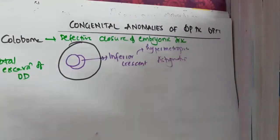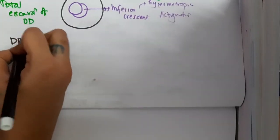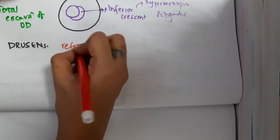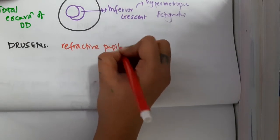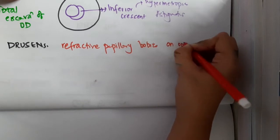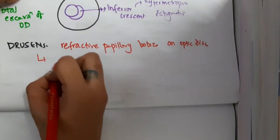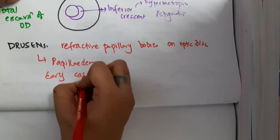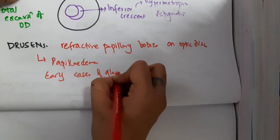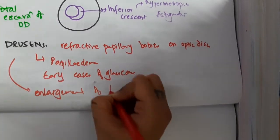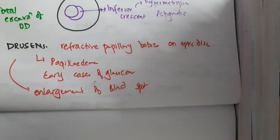The second anomaly is drusens. Drusens are refractile bodies — specifically, refractile infrapapillary bodies seen on the optic disc. They are associated with papilledema and early cases of glaucoma. There will also be enlargement of the blind spot in drusens.